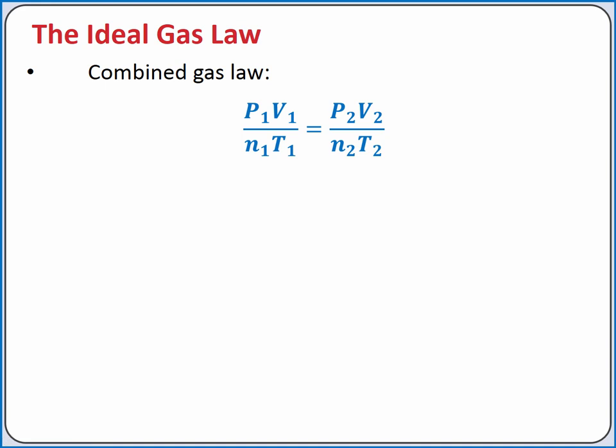In the combined gas law, we examine the relationship between pressure, volume, moles of gas, and temperature, saying P1 V1 over N1 T1 equals P2 V2 over N2 T2.